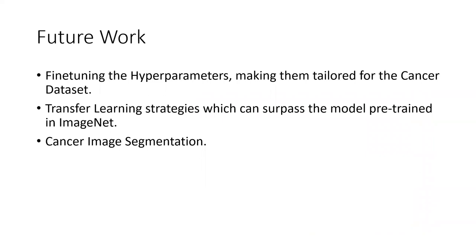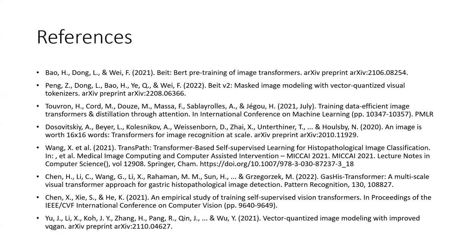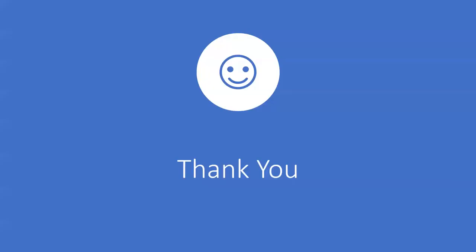For our future work we will look to fine-tune the hyperparameters, making them tailored for the cancer dataset. We have taken the hyperparameters directly from the BEIT paper which was for the ImageNet dataset, but of course the datasets are vastly different. Transfer learning strategies which can surpass the model pre-trained in ImageNet is one thing we are looking into, because surely a specialized model will perform much better than a model which has been trained on images which are unrelated to cancer. After that we would move on to cancer image segmentation wherein we would look to find the tumor boundaries based on the ground truth. These are our references. Thank you. Now I'll hand over to Zafariya. He's going to go over the interactive code notebook file which we have created for the easy running of BEIT.